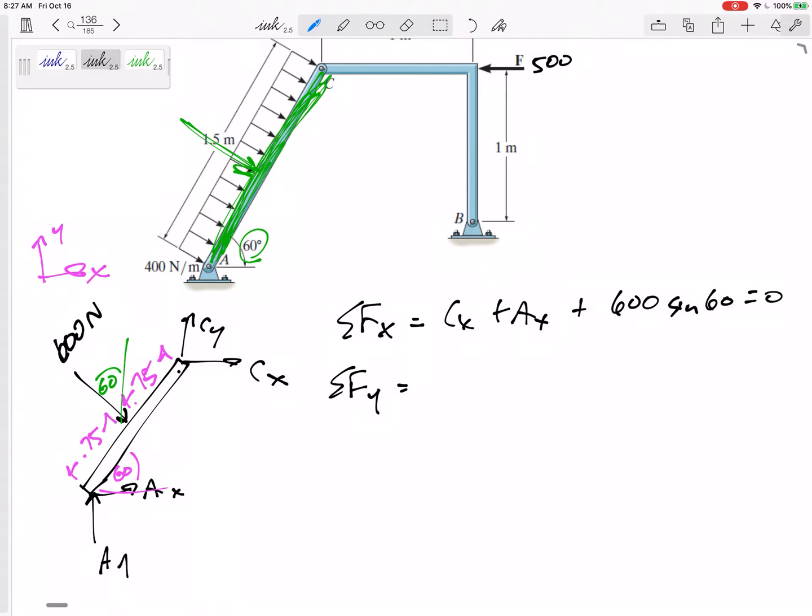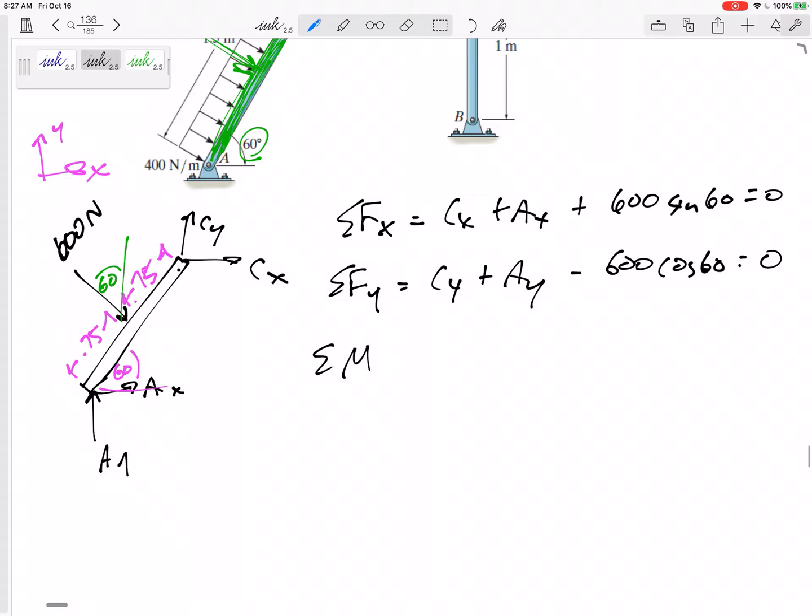Summing the forces in the Y direction: CY, AY, and then down 600 cosine 60 equals zero. And so now here, here's where thinking ahead will help me out. If I sum the moments about C, I have AX and AY in that equation. But if I sum the moments about A, I've got CX and CY in that equation. And so that's what I'm going to do. Sum the moments about point A.